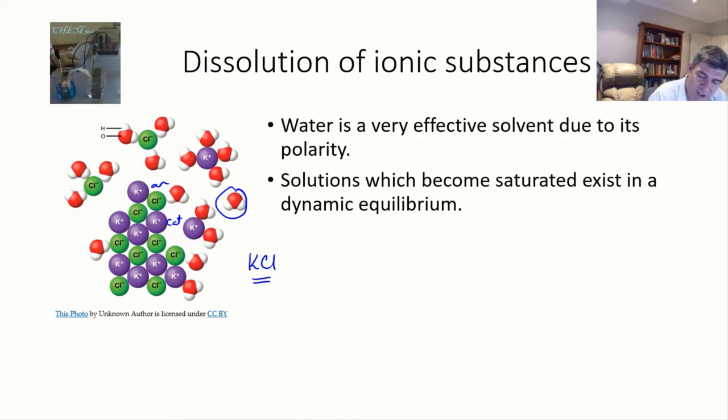Where the ion is a cation or positive ion, you can see that the slightly negative end of the water molecules are attracted to the cation. Alternatively, the slightly positive end of the water molecules are attracted to the anion. This is how a crystal of an ionic substance is pulled apart by water molecules.